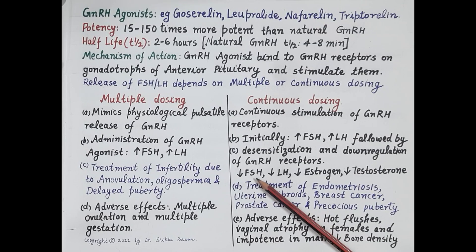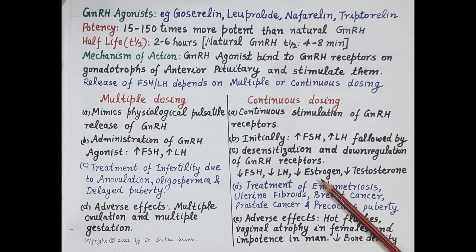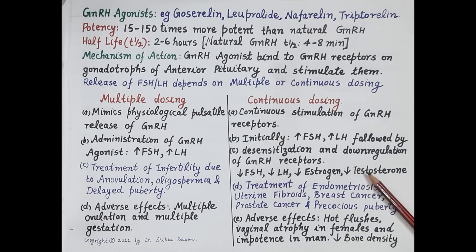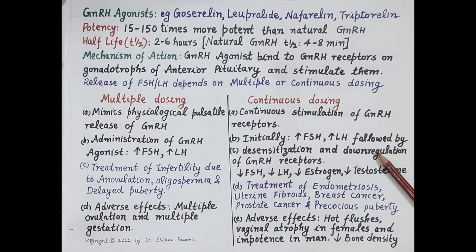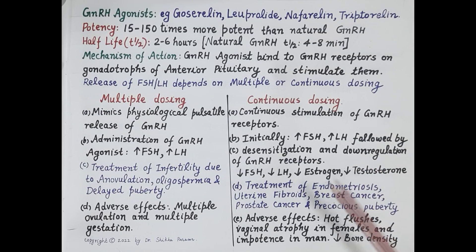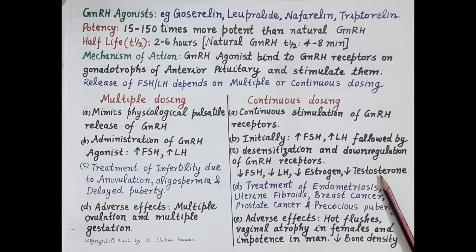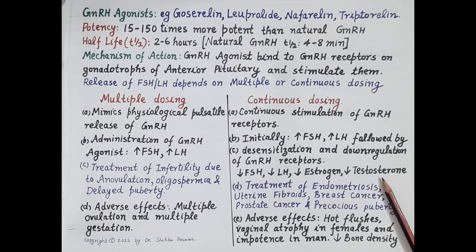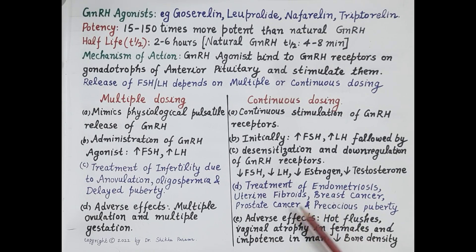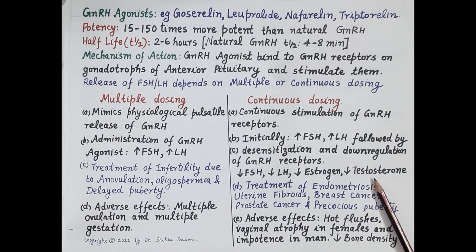Reduced secretion of FSH causes reduced secretion of estrogen by the developing follicles, lowering blood estrogen levels. Reduced secretion of LH also reduces secretion of testosterone in men and progesterone in women. Therefore, the continuous approach is used in the treatment of increased estrogen-related problems in women such as endometriosis, uterine fibroids, and breast cancer. Since it also reduces testosterone secretion, it is used in the treatment of prostate cancer in males.